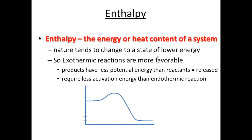Our terms: first off, enthalpy. Enthalpy is the energy or the heat content of a system. Nature tends towards the lowest possible energy state. Basically, it's saying that things want to be lazy. Exothermic reactions want to release energy — they're more favorable because the products have less energy than the reactants, so those reactions are more favored than endothermic reactions.